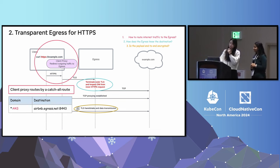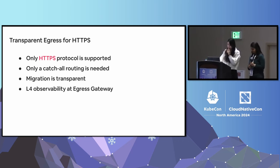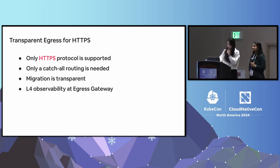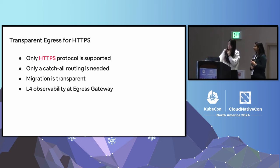To summarize: this type of egress only supports HTTPS traffic because we need the SNI indicator. Routing logic is simple — we only add a catch-all rule in the client proxies. We don't need to touch application code everywhere, so migration is transparent because Airbnb services already run with Istio proxy — we only need to make the change in the proxy. Lastly, only L4-level observability is available for the same reason: the payload is end-to-end encrypted.